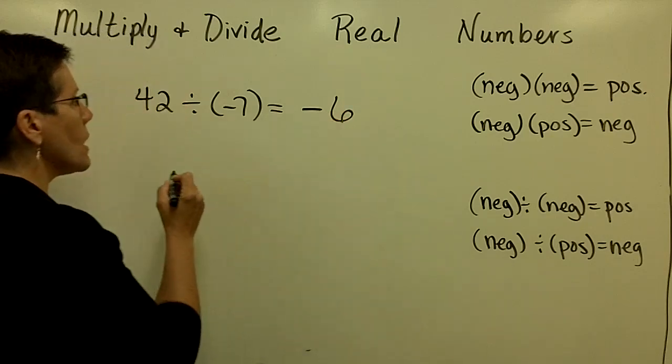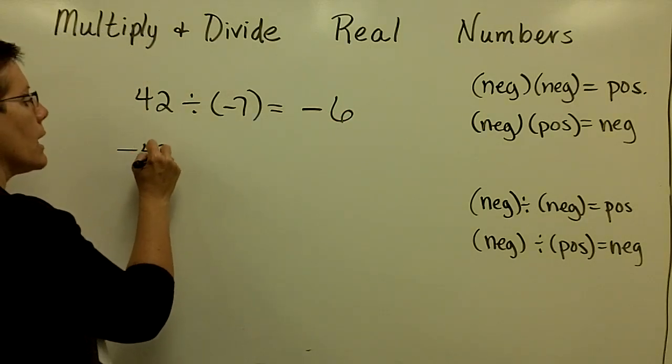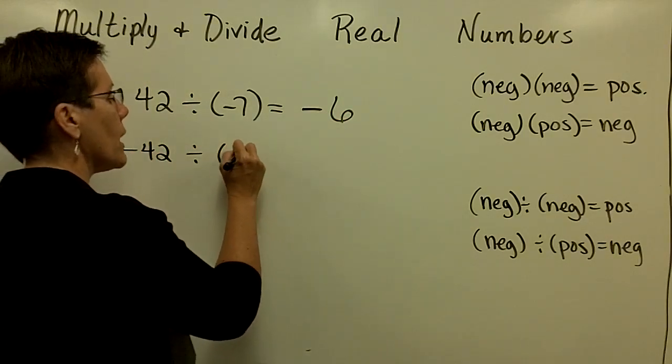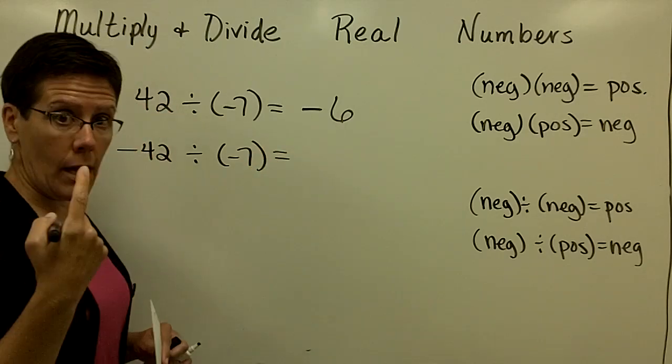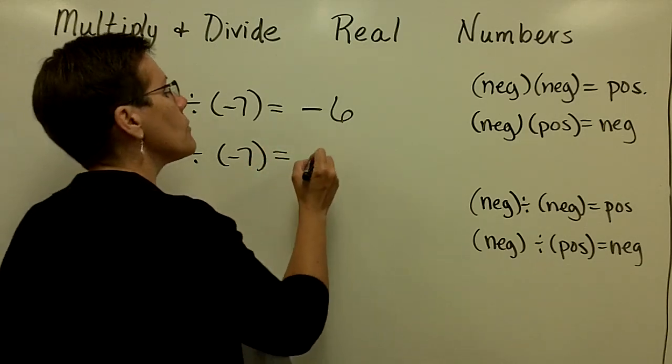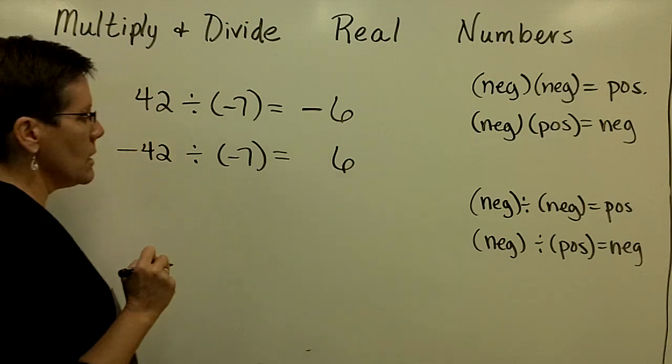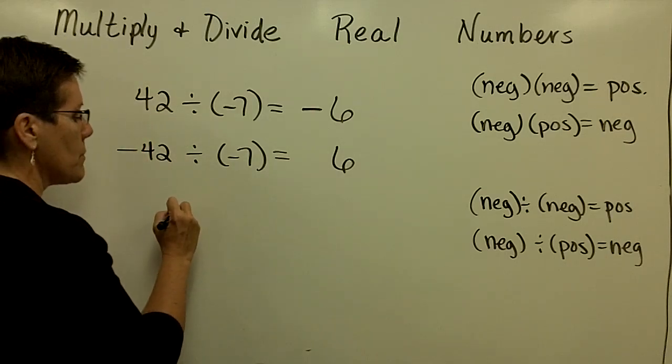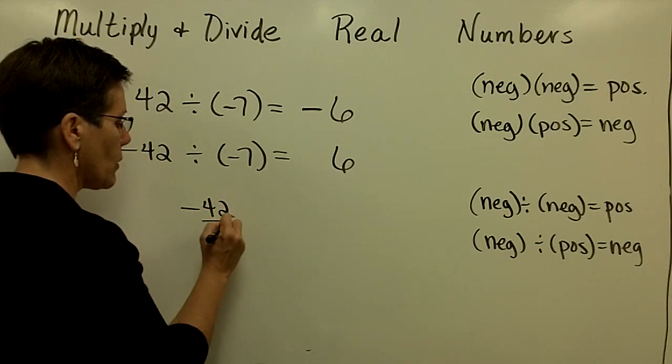So in this case, a negative 6. If I wrote a negative 42 divided by a negative 7, you would say a negative divided by a negative is a positive. I would like you to know that these problems could be written with a bar instead of with a division symbol.